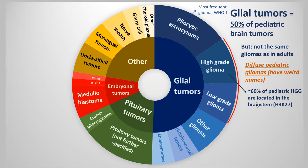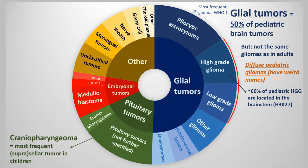High-grade gliomas in children are, in the majority of cases — more than half — located in the brain stem, which is different from adults. In adults, the most frequent glioma is glioblastoma, and glioblastomas are mostly located in the supratentorial brain parenchyma and are infrequent in the brain stem or cerebellum.